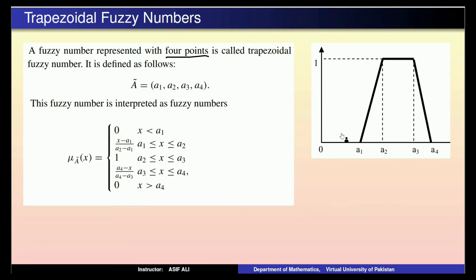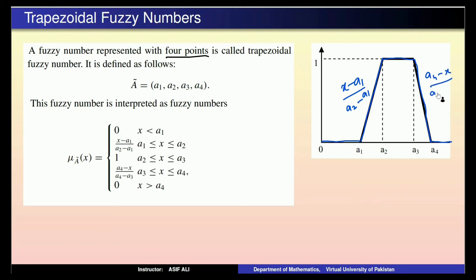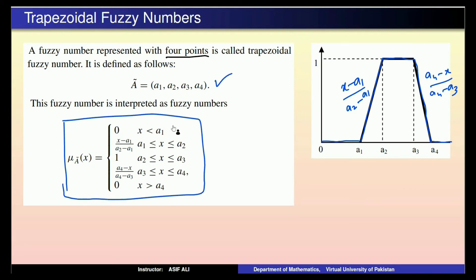Graphically دیکھیں: a1 سے کم کے لیے 0 ہے، a1 سے a2 کے لیے rising line ہے جو (x − a1)/(a2 − a1) ہے، a2 سے a3 کے لیے value 1 ہے، a3 سے a4 کے لیے falling line ہے جو (a4 − x)/(a4 − a3) ہے، اور a4 سے آگے 0 ہے۔ یہ trapezoidal fuzzy number کا membership function اور graphical representation ہے۔